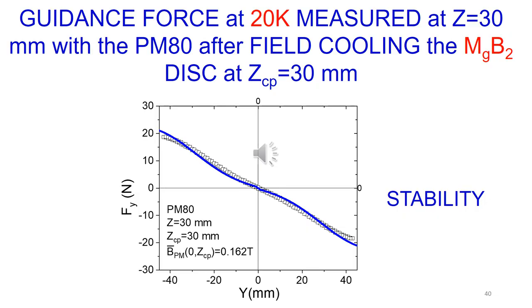Here we see the guidance force applied to a MgB2 superconductor. The slope of the guidance force is negative. This shows that levitation is stable. The measurements are correctly reproduced by the calculation shown as the blue line.